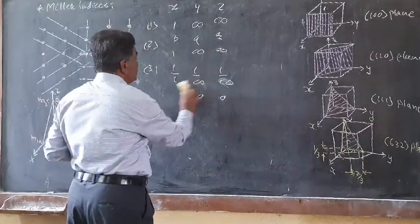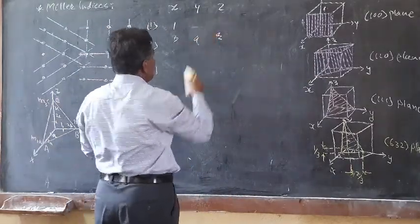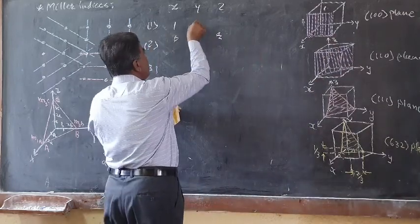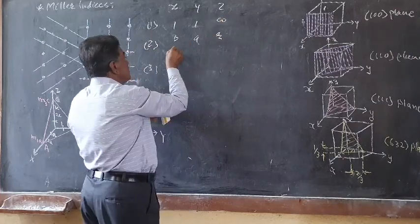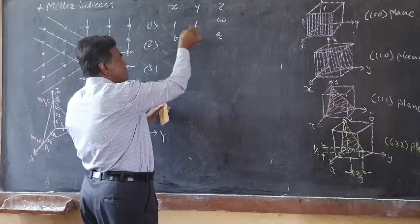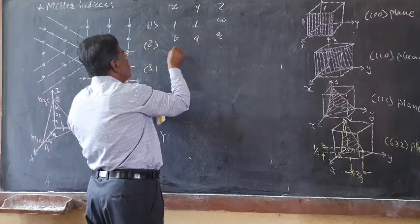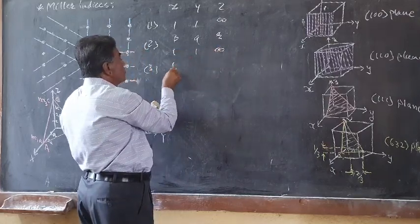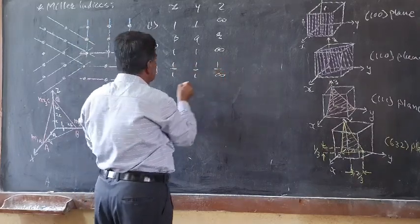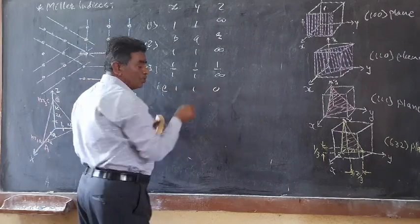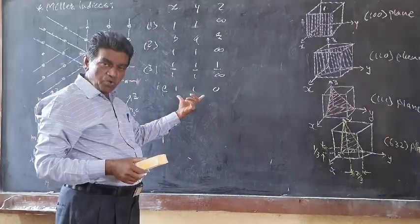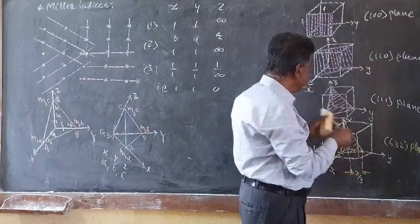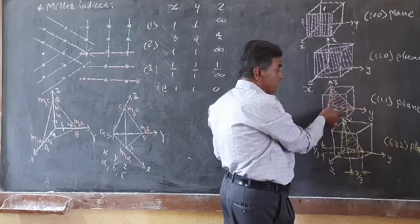For the second plane, it makes intercepts of 1 on x, 1 on y, and is parallel to z giving infinity. In terms of unit cell parameters the intercepts are 1, 1, ∞. Taking reciprocals gives 1/1, 1/1, 1/∞, which equals 1, 1, 0. Since these are whole numbers with no fractions, the Miller indices of this shaded plane are (110).